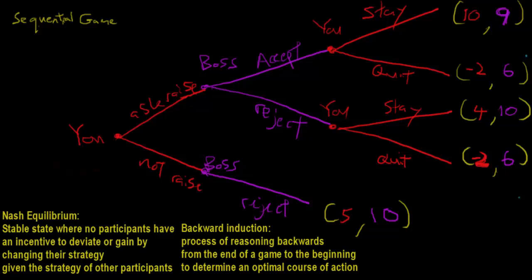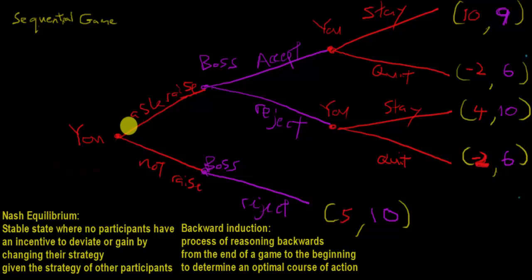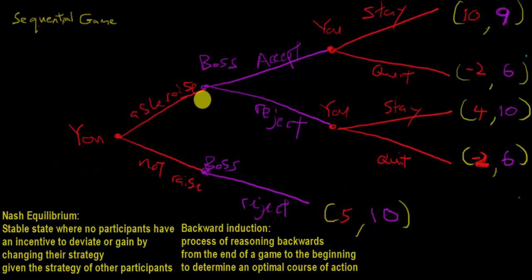Now I'll show you how to use backwards induction to find the Nash equilibrium — the steady state — to make predictions based on our assumptions. It's misleading to think you just look at the numbers and magically figure out what happens. You always start from the beginning, with the idea that each player cares about the consequences of their choices and must think ahead. You could choose to ask or not ask, knowing you get a utility of 5 by staying silent, but you need to figure out what happens when you do ask.